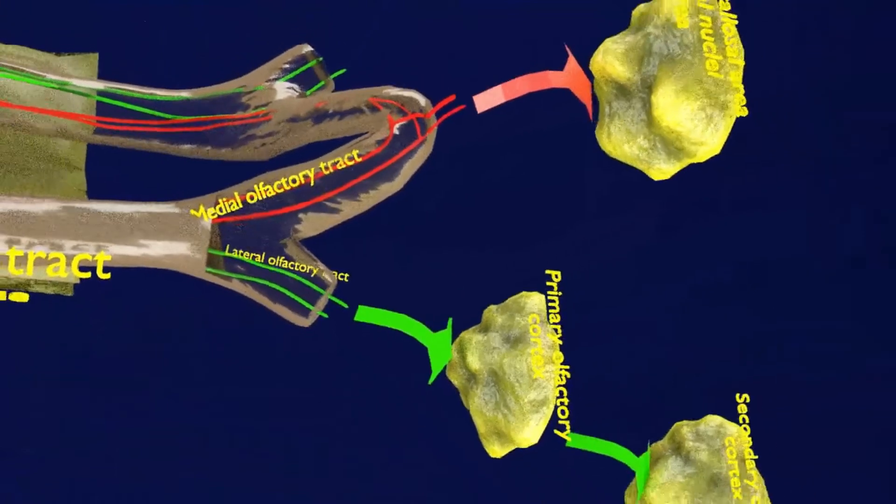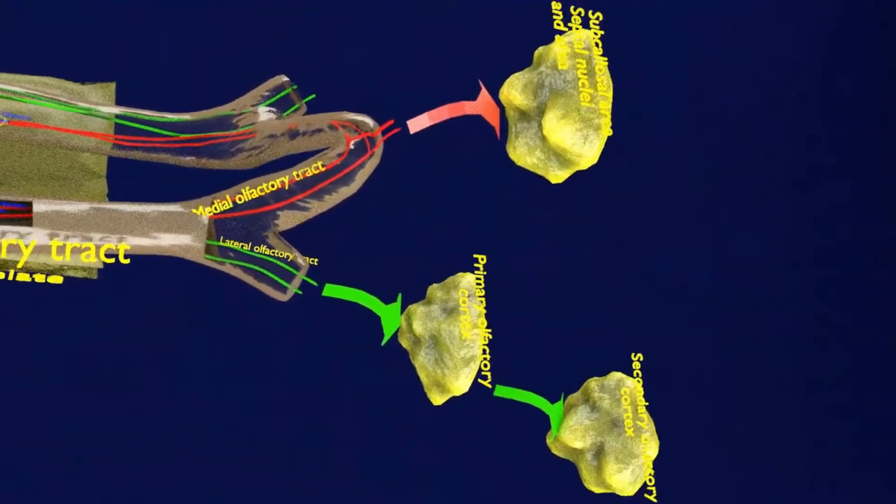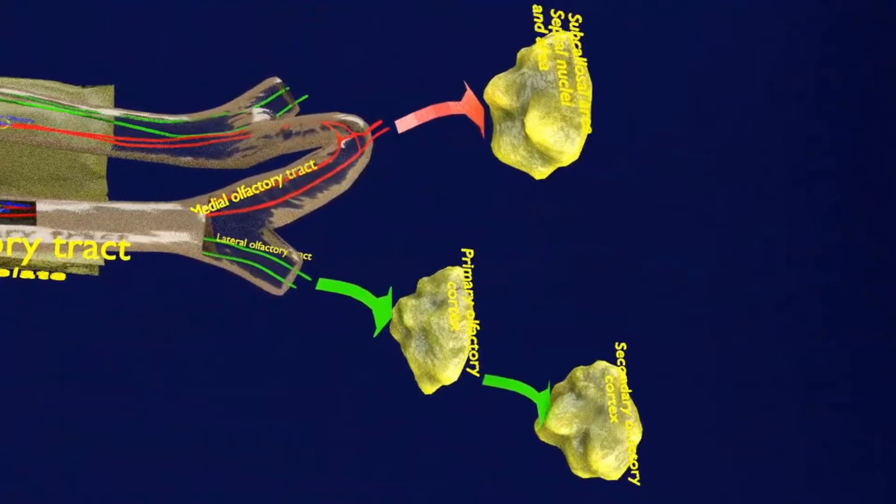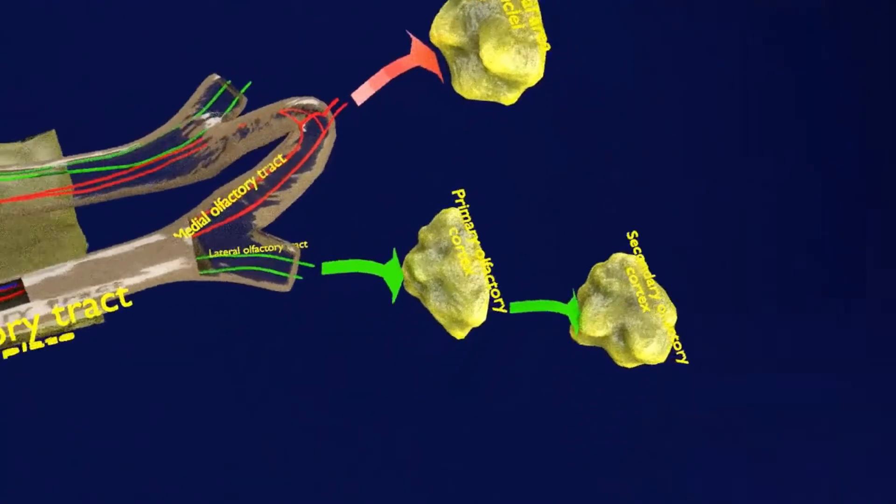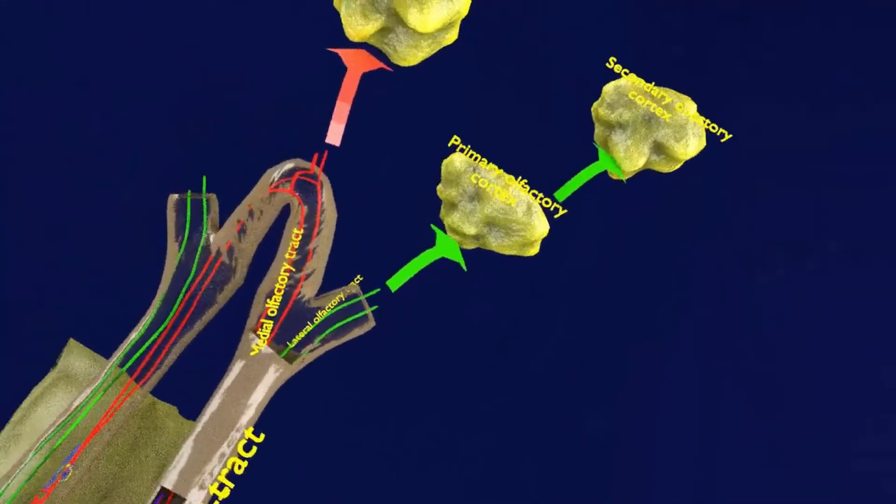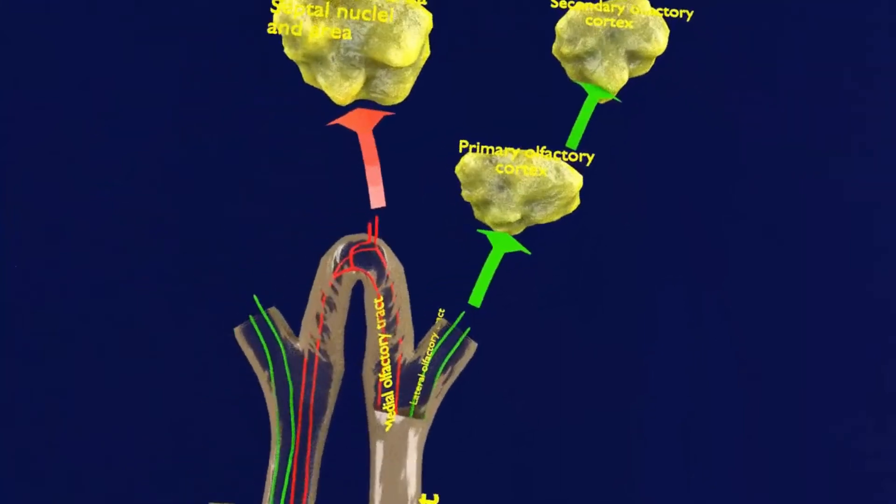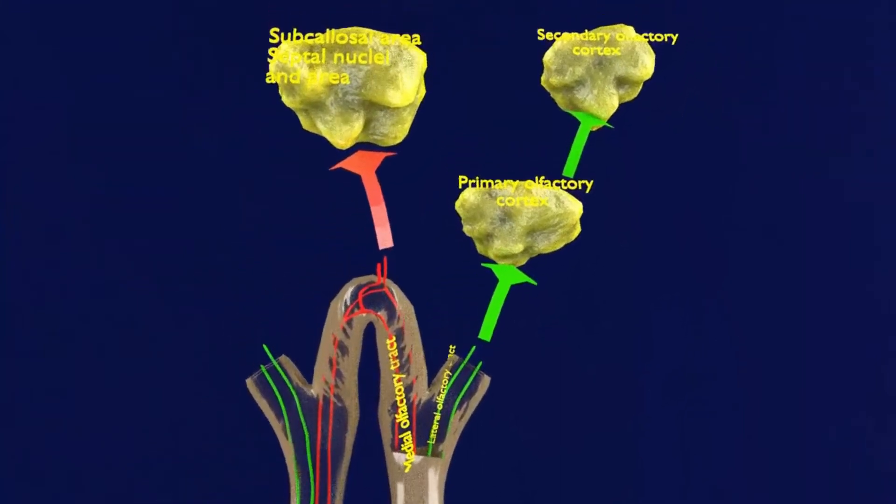The lateral tract enters the primary olfactory cortex that is anterior olfactory nucleus and the piriform cortex and then the secondary olfactory cortex that is the orbitofrontal cortex.